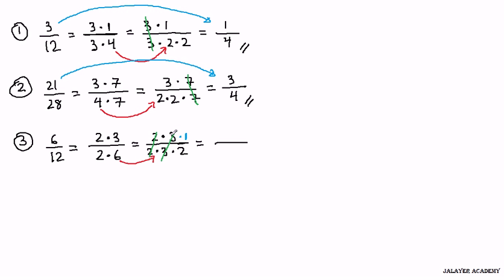So let's write our answer here. In the top, we've crossed everything out, so all that's left is 1. If we've crossed everything out, all that's left is 1, not 0. And the denominator, all that's left is 2. So 6 twelfths is equal to 1 half.